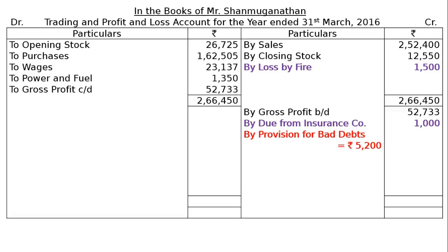If the old provision were less than the new provision, the difference would be deducted from the debit side of the Profit and Loss Account. Less provision for bad debt is Rs. 2,485. This is because sundry debtors include an item of Rs. 500 due from a customer who has become insolvent and nothing is recoverable. We must deduct this Rs. 500 as a further bad debt from the debtors balance.